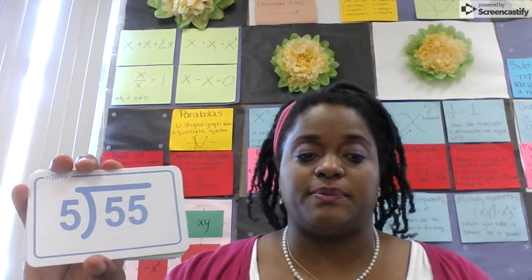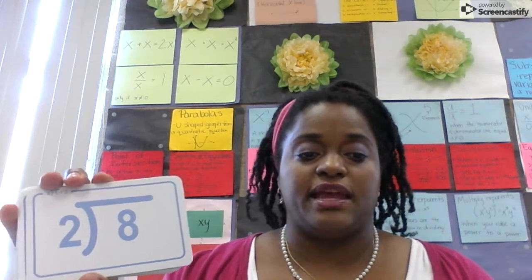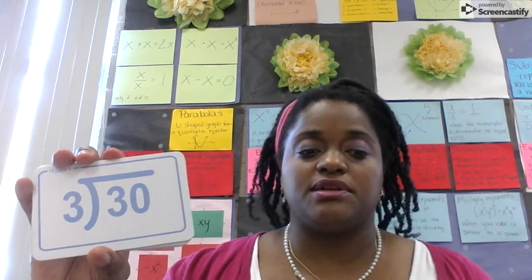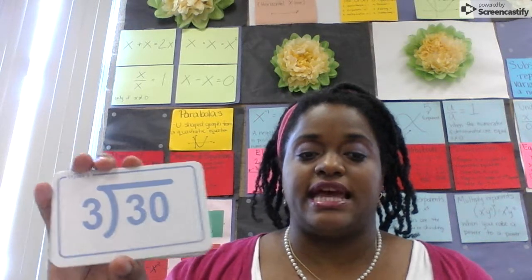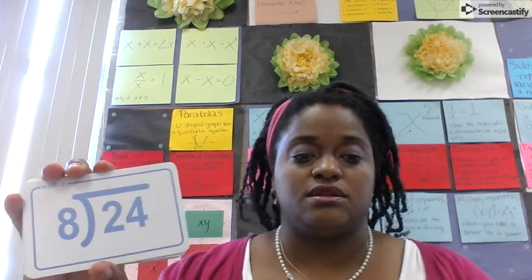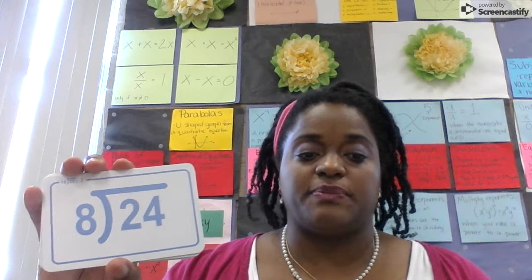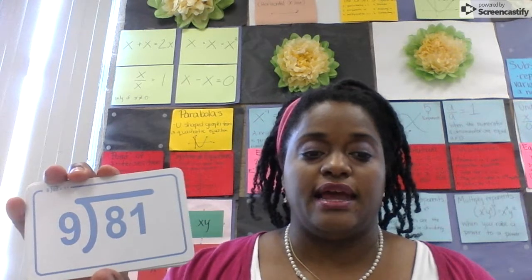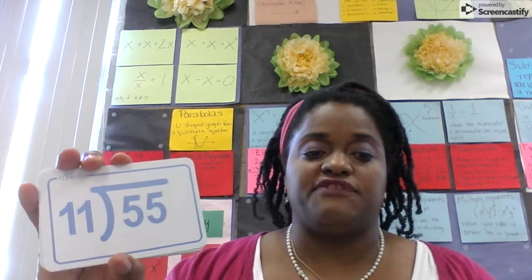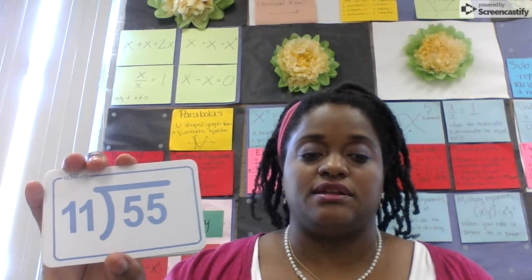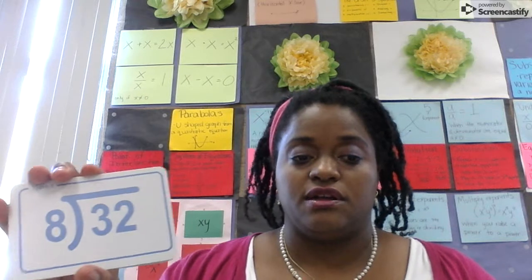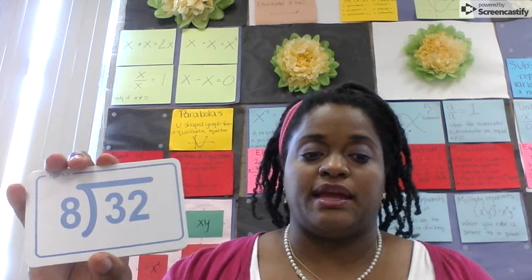55 divided by 5 is 11. 8 divided by 2 is 4. 30 divided by 3 is 10. 84 divided by 12 is 7. 24 divided by 8 is 3. 81 divided by 9 is 9. 55 divided by 11 is 5. 30 divided by 6 is 5. 32 divided by 8 is 4.